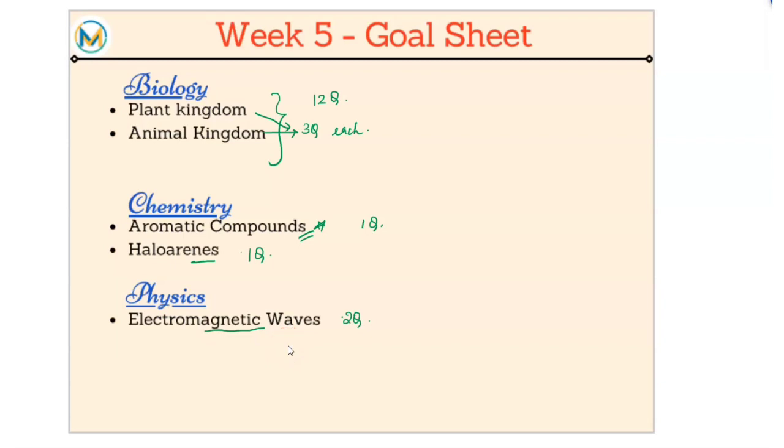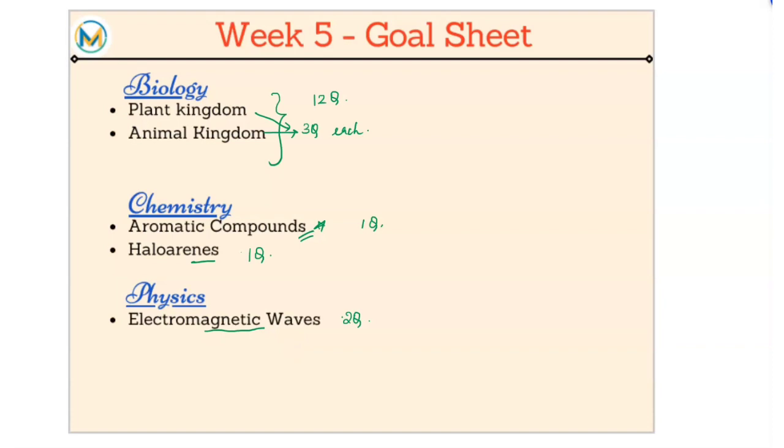So let's see what we have to do day on day basis. So this is your entire five week. See how it looks, less stress right? No, we're going to do a lot of things here. See, in the first day we will do plant kingdom, we'll do aromatic compounds. I want you to complete aromatic compounds in day one itself, then electromagnetic waves complete half the chapter in day one.